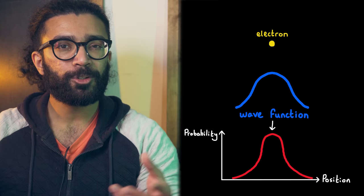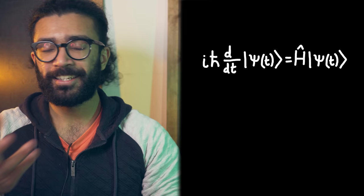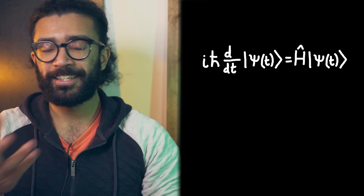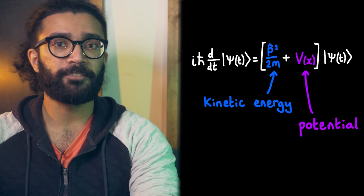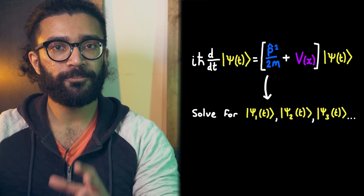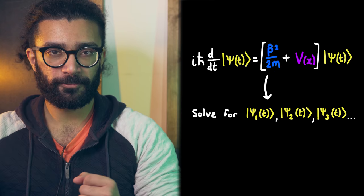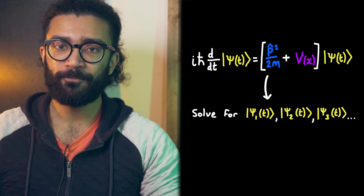Here's an important question: how do we know what the allowed wave functions for any system look like? How do we take a system we're studying and find its wave functions? Well, we do this by using the Schrödinger equation. This is one of the most important equations in quantum mechanics. We can take properties of our system — like the kinetic energy of the particle and any potential that it happens to be in — plug this information into the Schrödinger equation, and then solve it to find the allowed wave functions. In many cases this is simple enough, but for certain systems this is difficult.